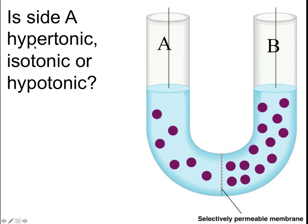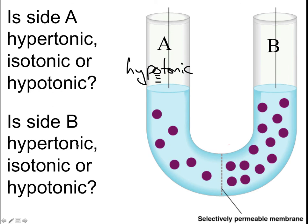So is side A hypertonic, isotonic, or hypotonic? Side A definitely has less solutes, so side A would be hypotonic. Is side B hypertonic, isotonic, or hypotonic? Well, side B has much more solute, so side B would be hypertonic.